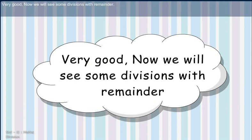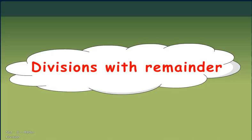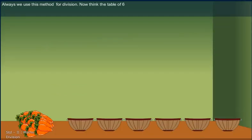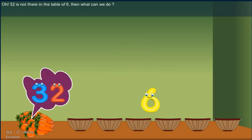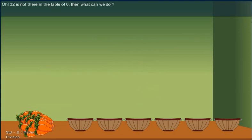Now we will see some divisions with remainder. Divisions with remainder. Always we use this method for division. Now think the table of 6. Oh, 32 is not there in the table of 6. Then what we can do?